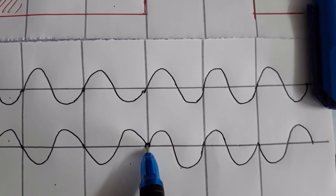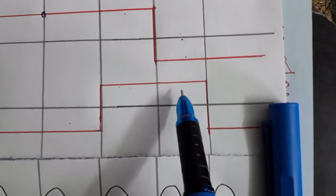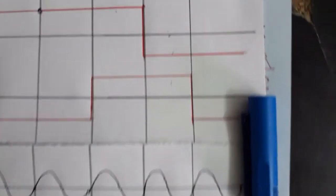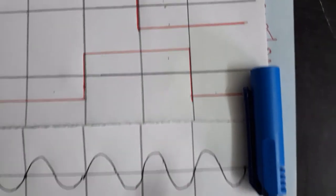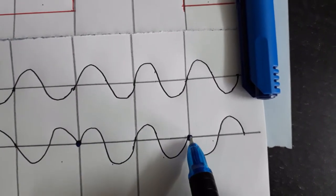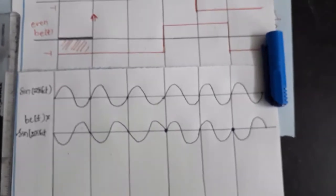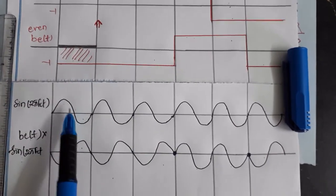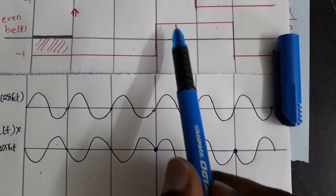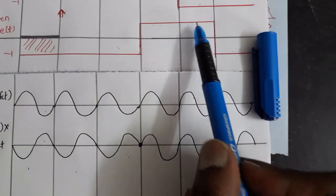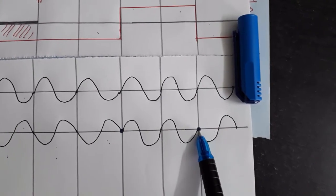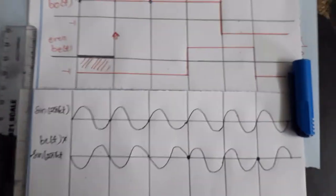Since the previous part was inverted, I get an M shape here. The next part is 1, so 1 into carrier is the carrier retained. The next part is minus 1, so the carrier is inverted, giving a W shape. To summarize: minus 1 into carrier gives the carrier inverted (M shape), 1 into carrier retains it, then minus 1 gives the carrier inverted (W shape).